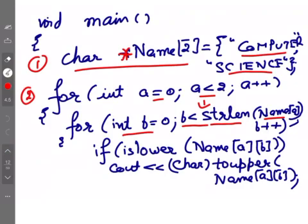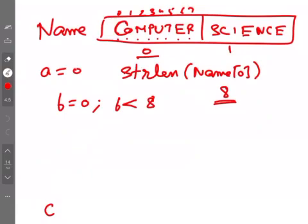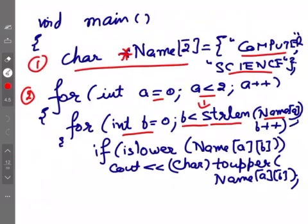Now name[a][b] is name[0][1], which is 'O'. islower is false — we have no lowercase letters since COMPUTER and SCIENCE are both fully in capitals, so this condition will always be false. Then it checks isupper — yes, it is upper — but b is now 1, and 1 is not divisible by 2, so it goes to the else branch and prints 'O' as-is.